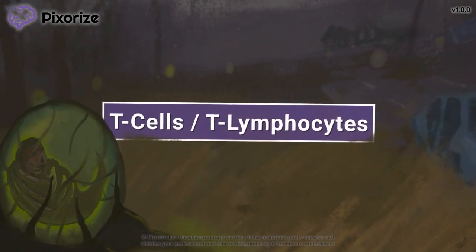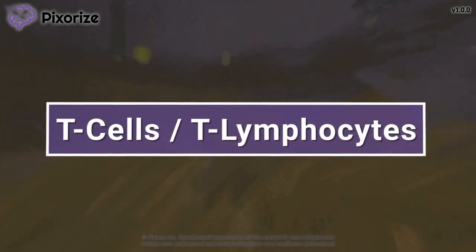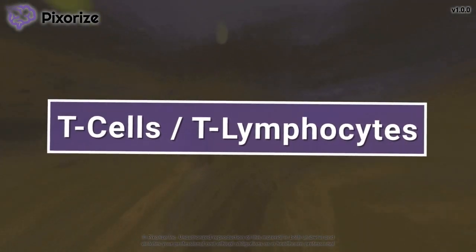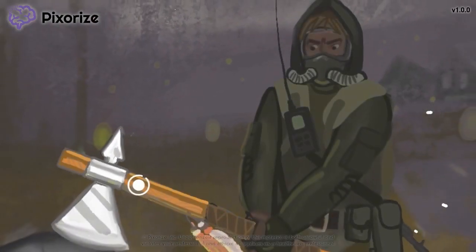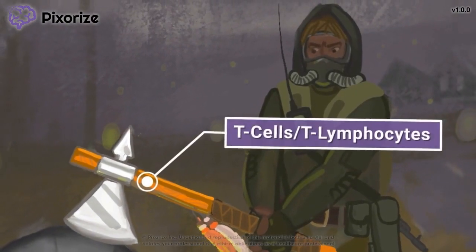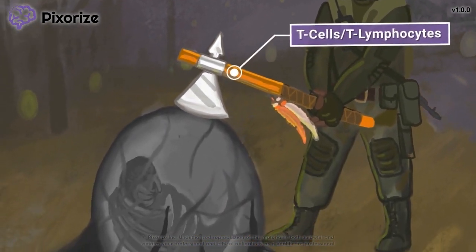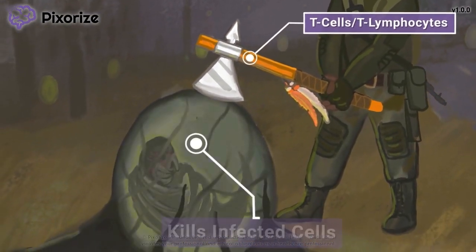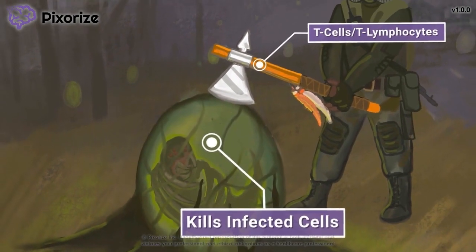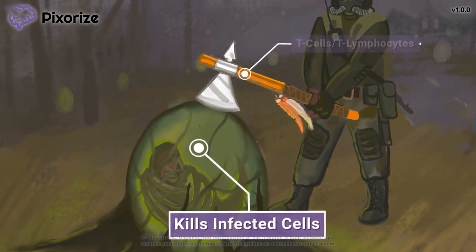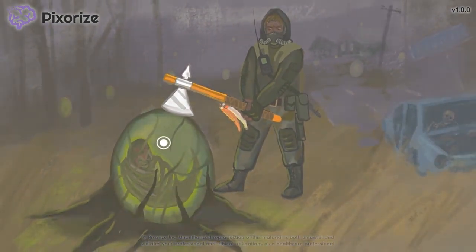T-cells, also known as T-lymphocytes, are a major class of white blood cells in our adaptive immune system. There's a lot to know about T-cells and how they function, so we'll give you a handy visual mnemonic to remember everything you need to know about T-cells for test day.